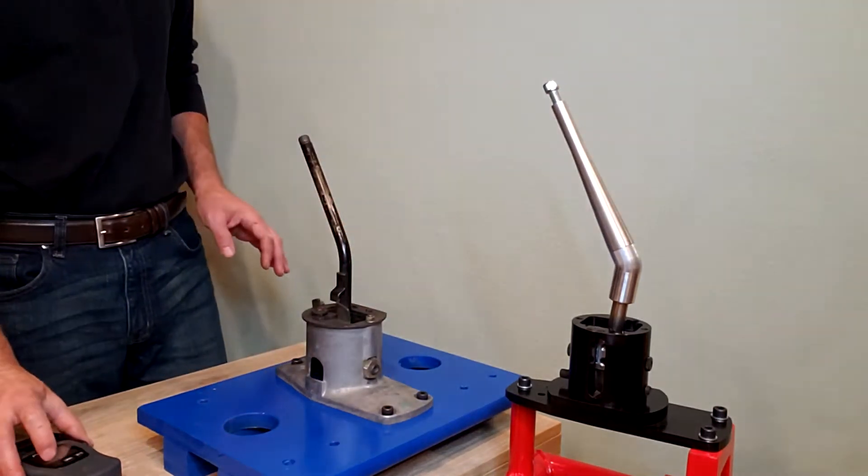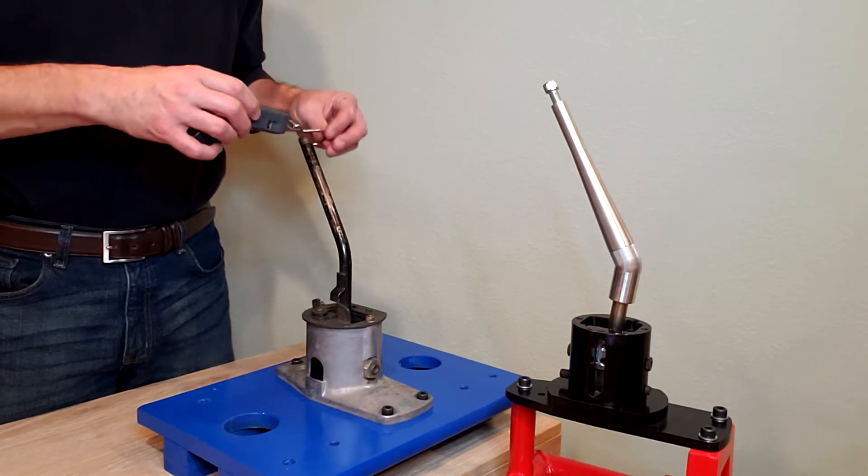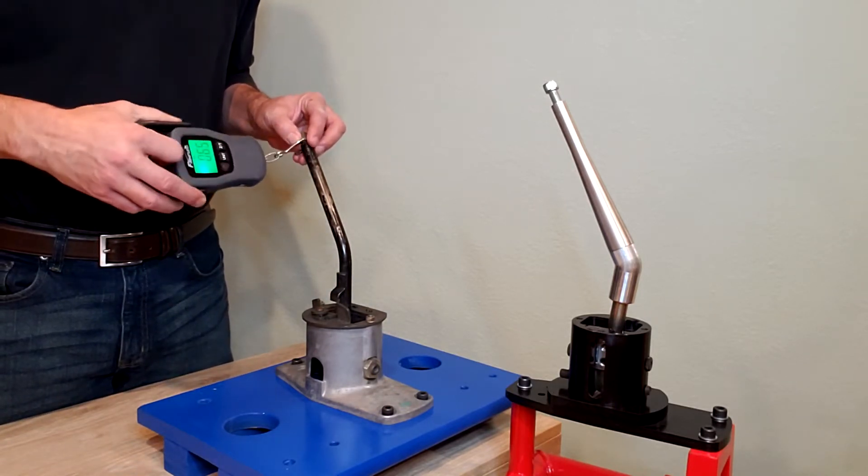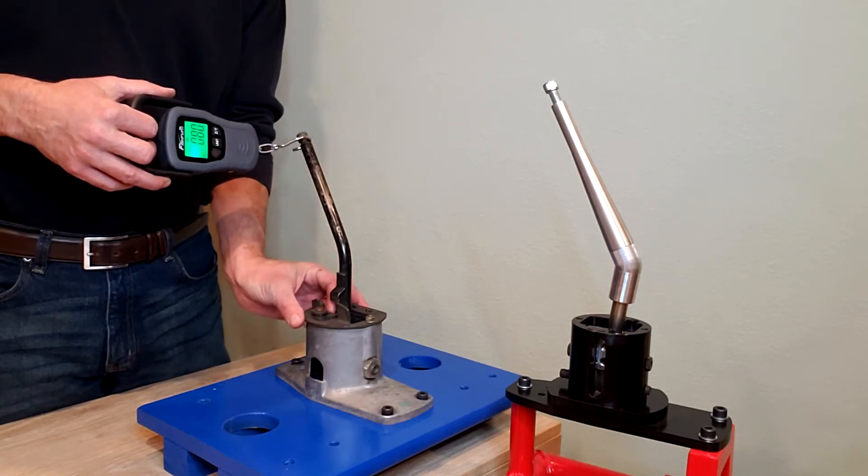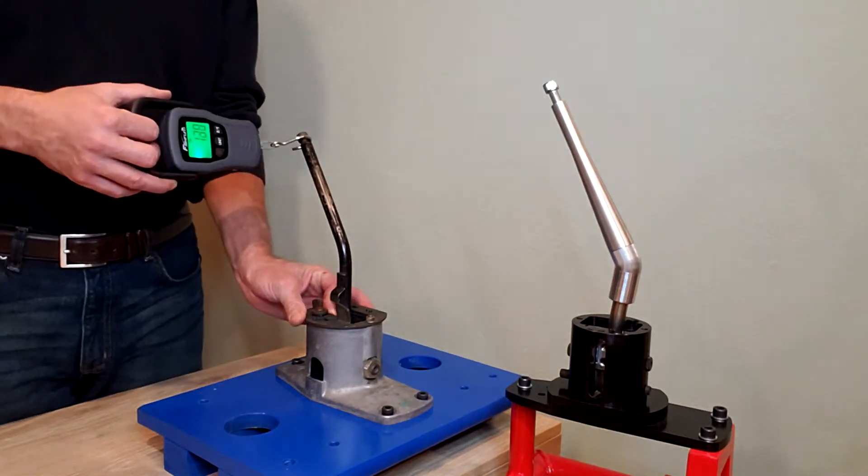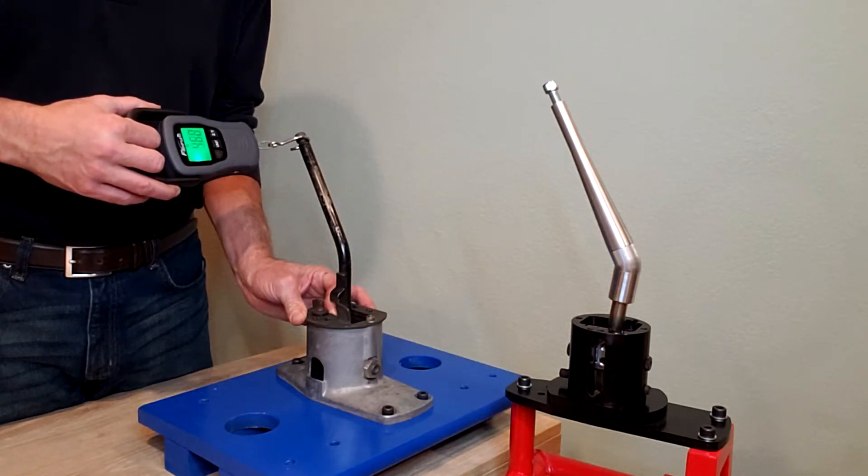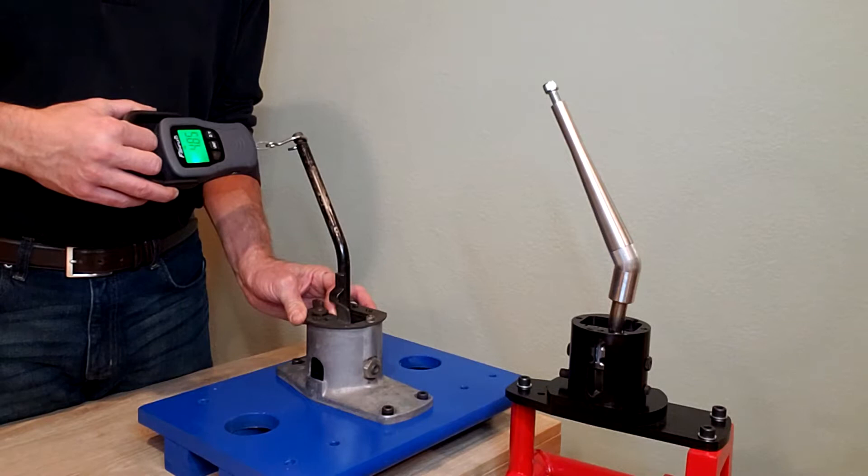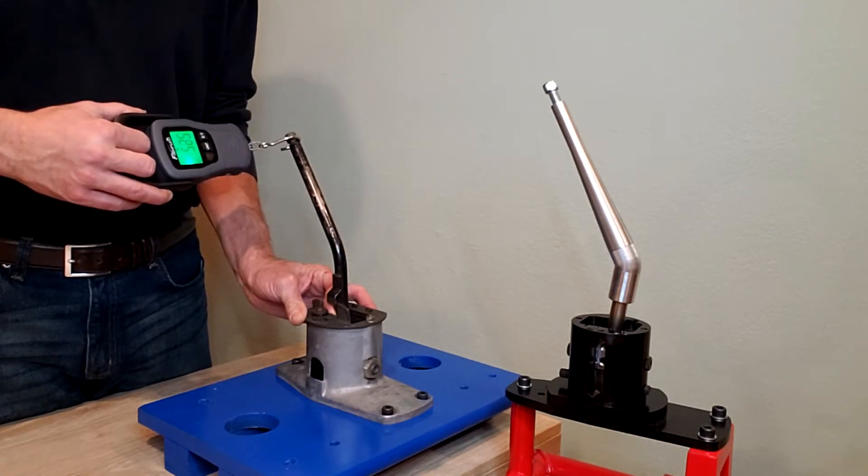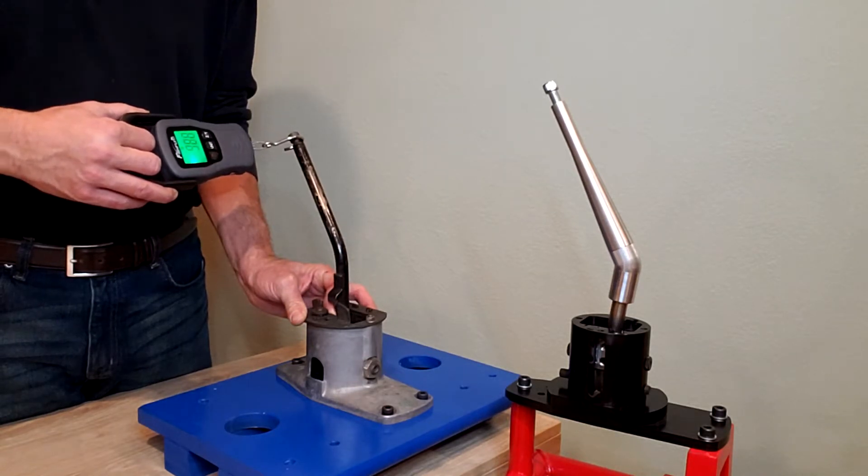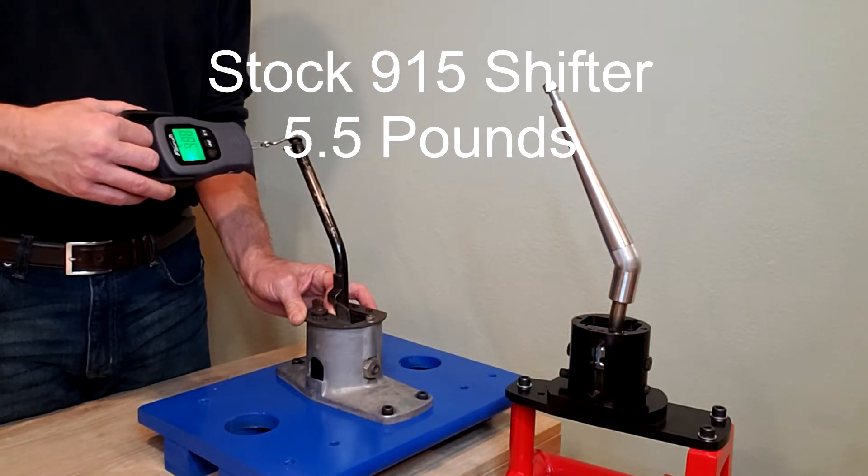The first thing I'm going to do is take my scale here and measure the tension, measure the force required to move this factory 915 shifter into the fifth reverse gate. I'm going to put my finger on the reverse lockout pawl, so that's not a factor, and then move the shifter with my force scale. It comes out to right about five pounds to get it moving and about five and a half pounds for one inch of deflection.